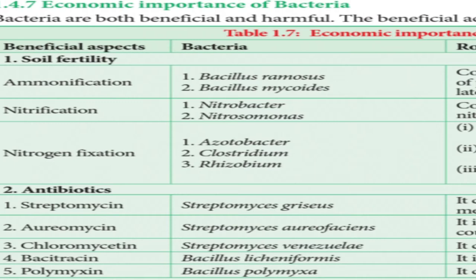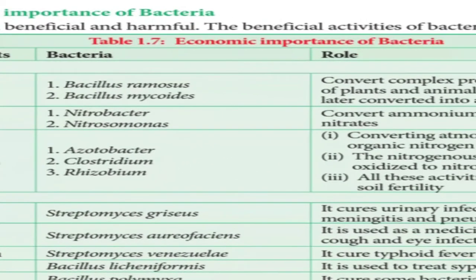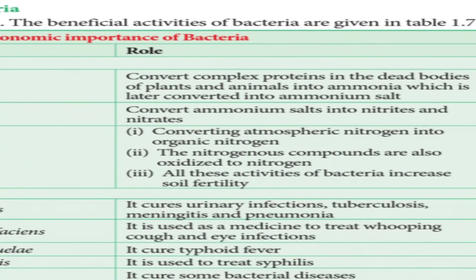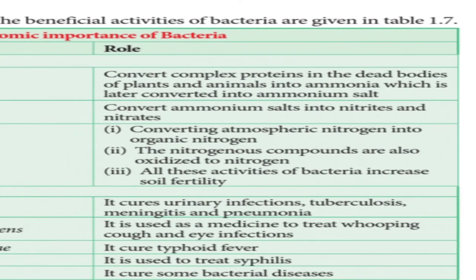Soil Fertility. Ammonification means proteins are converted to ammonia. The proteins from the dead organic matter are converted to ammonia. The bacteria for ammonification, or ammonifying bacteria, are Bacillus rammosis and Bacillus mycoideus. They convert complex proteins from dead bodies of plants and animals into ammonia, which is later converted into ammonium salts.